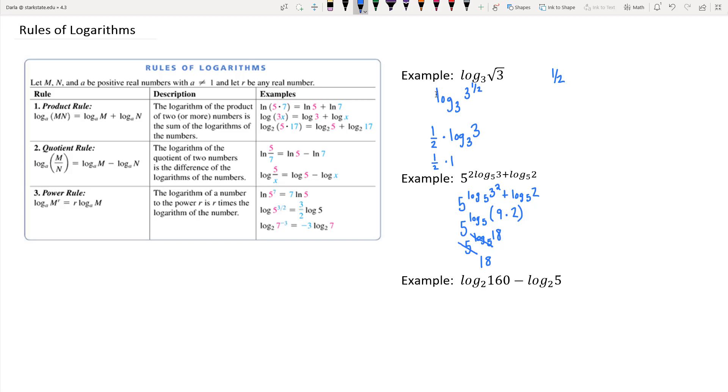And then last, we have log base two of 160 minus log base two of five. Those are logarithms of the same base with a difference. We can condense that down into a quotient. So this would be log base two of 160 divided by five.